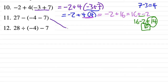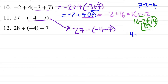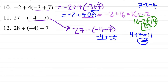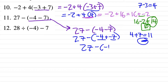Number 11: 27 minus the quantity (negative 4 minus 7). Parentheses first: negative 4 minus 7. If you have two negatives, think of it as adding: 4 plus 7 equals 11, then apply the negative sign — giving negative 11. So it's 27 minus negative 11. Two negative signs in a row — the double dagger method — make it positive: 27 plus 11 equals 38.